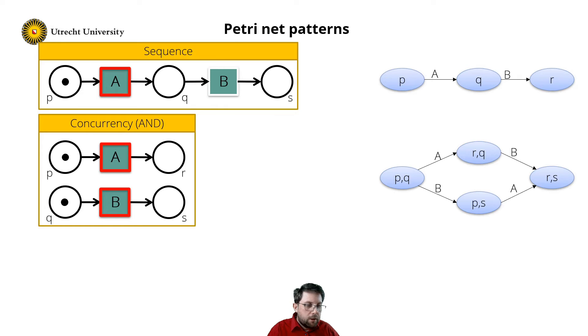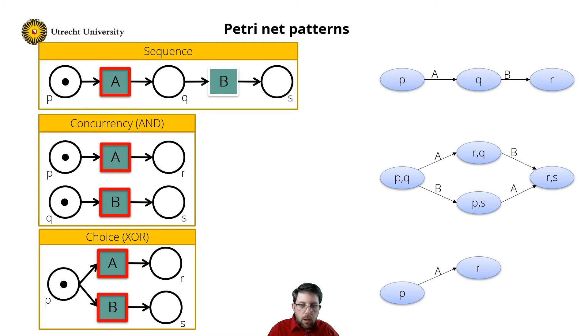Hence, if you see a diamond like this in a labelled transition system, you know that the transitions are concurrent. A third pattern is choice. A choice between A and B is signified by a state with two outgoing edges, but the diamond is not completed.